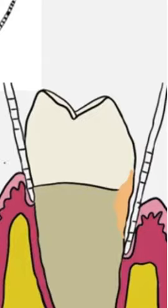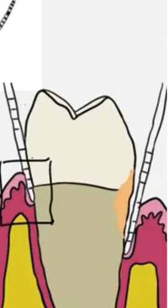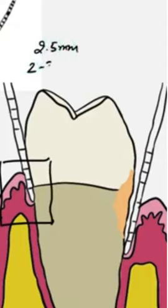This part right here is the gingival sulcus. If we see the markings of the probe, this sulcus depth is about 2.5 mm. Anywhere between 2 to 3 mm is considered to be absolutely normal and it is termed as the gingival sulcus.